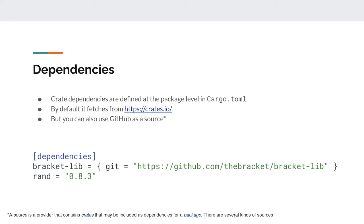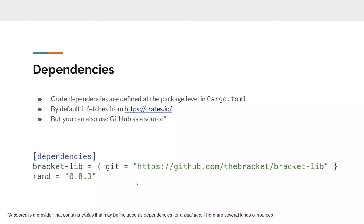The benefit of the lock file is that when you push and pull code between different computers, other people are guaranteed their code will build and function the same way because they're using exactly the same library versions. You should commit both cargo.toml and cargo.lock. Running `cargo update` updates the lock file and libraries to the latest version based on what you put in dependencies.